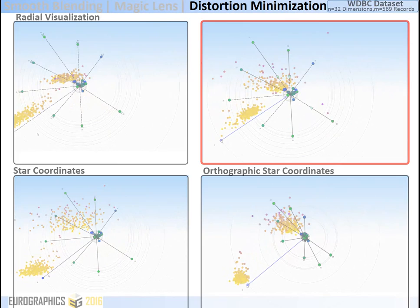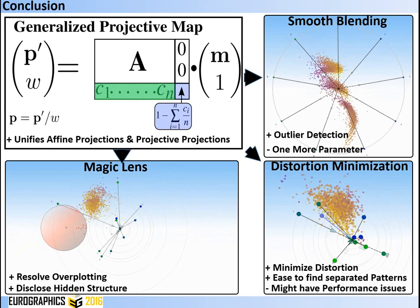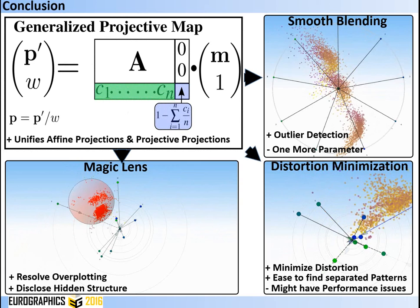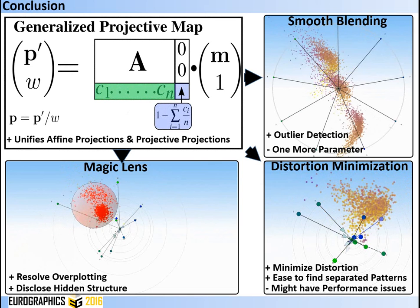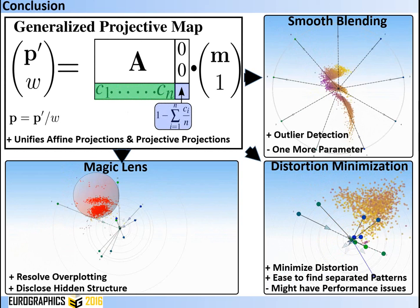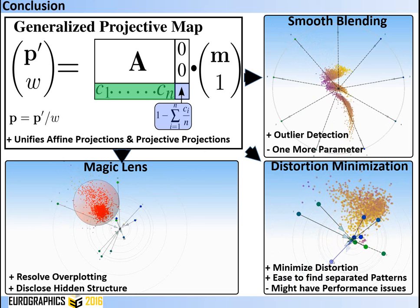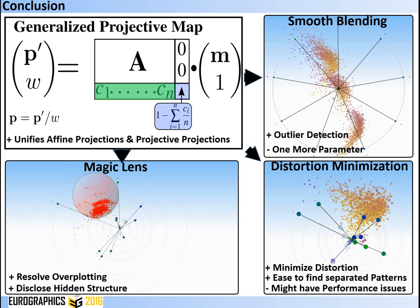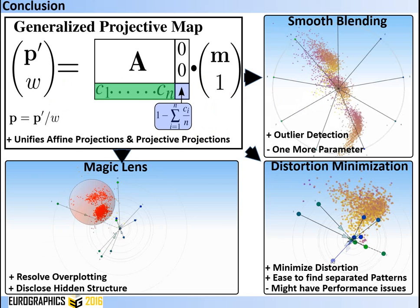In conclusion, our general projective map unifies affine and projective projections by introducing projective coefficients as an additional degree of freedom. This enables three applications: smooth blending between radial visualizations and star coordinates to support outlier detection; a novel data-related magic lens concept to overcome overplotting and disclose hidden structure; and a distortion minimization interaction scheme. Our technique provides a strong starting point for projection-related visual data analysis. Thank you for watching.